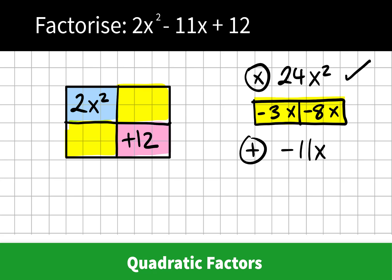Now we can place the negative 3x and the negative 8x into either place that we want to go. So we place the negative 3x in one of the squares and the negative 8x in the other. Looking along the top, is there any common factors between 2x squared and negative 3x?